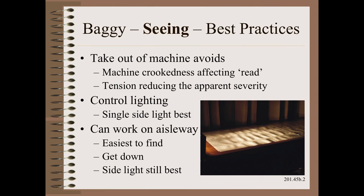Our eyes are the very best troubleshooting instrument for many problems, and bagginess is no exception. Still, we can improve our view by a few simple best-practice techniques. First, it is best to take the web out of the machine and lay it on a flat surface. This is helpful because it removes any machine crookedness from the read, and it removes tension that can pull some apparent bagginess out and make it harder to read.